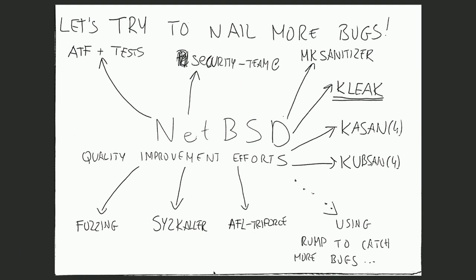There are many projects ongoing to help us find more bugs in NetBSD. Most of them are connected with fuzzing. We have a few projects sponsored by Google Summer of Code, which includes AFL and fancy stuff like that, or SysColar. Today I'm going to show you how we can fuzz the NetBSD kernel in user space. We also have things that help us find bugs in kernel space by using address sanitizer on top of the kernel, or undefined behavior sanitizer. In fact, we are now the most sanitized BSD in the world.